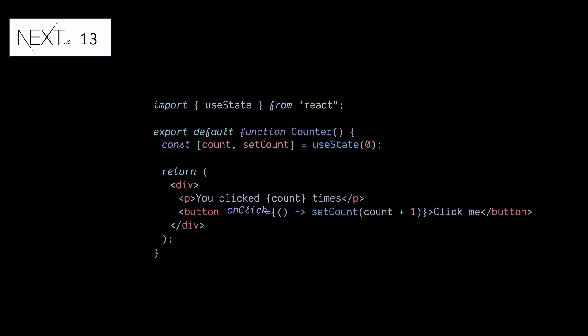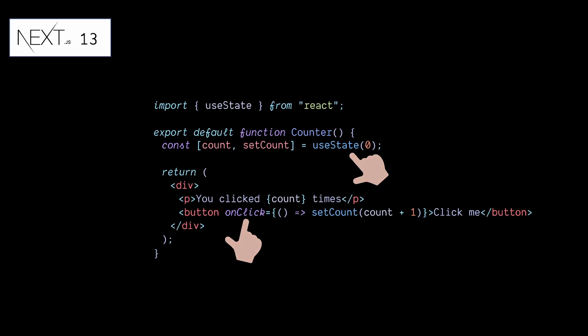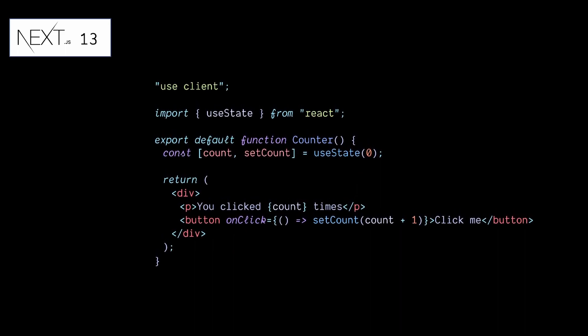Given this component, in Next.js it will be treated as a server component by default. But since it has interactivity and event listeners like onClick, and makes use of the useState hook, Next.js will throw an error since these are client-side features. To fix this, we should mark this component as a client component by adding the 'use client' directive at the top of the file.